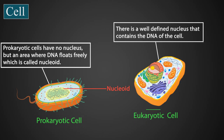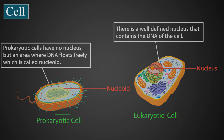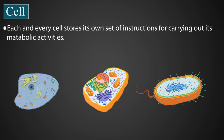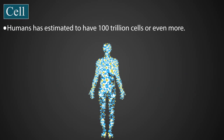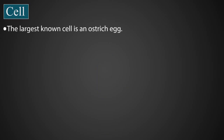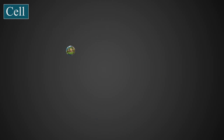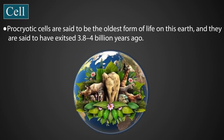There is a well-defined nucleus that contains the DNA of the eukaryotic cell. Now let's learn a few interesting points. Each and every cell stores its own set of instructions for carrying out its metabolic activities. Humans are estimated to have 100 trillion cells or even more. Prokaryotic cells are said to be the oldest form of life on earth, existing 3.8 to 4 billion years ago.